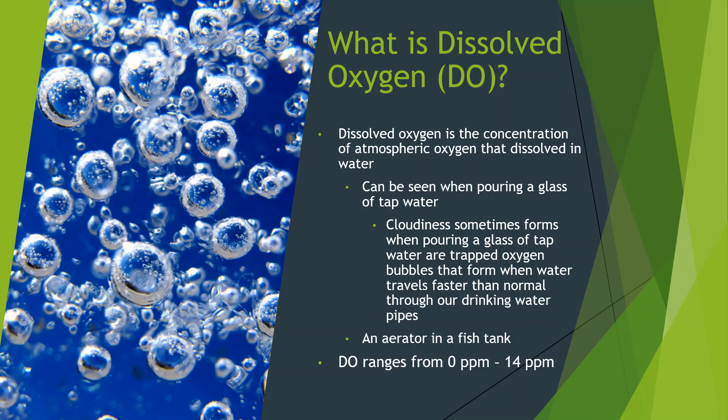Dissolved oxygen ranges between 0 ppm and 14 ppm — parts per million. To put that in perspective: in a glass of fresh water, for every million molecules in that glass, at most 14 of them are oxygen.